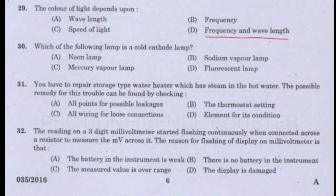Question number 30. Which of the following lamp is a cold cathode lamp? Option A - Neon lamp. Option B - Sodium vapour lamp. Option C - Mercury vapour lamp. Option D - Fluorescent lamp. Answer is Option C: Mercury vapour lamp.